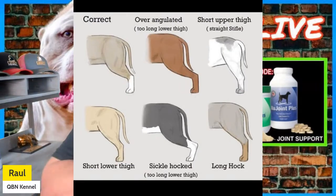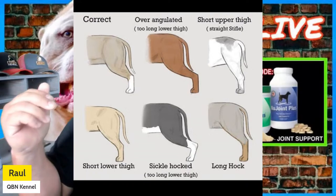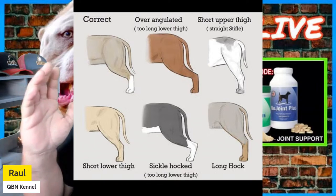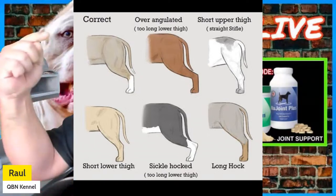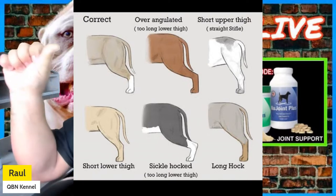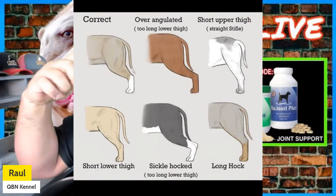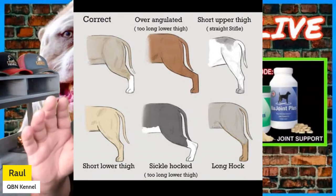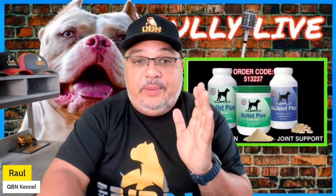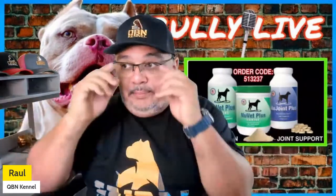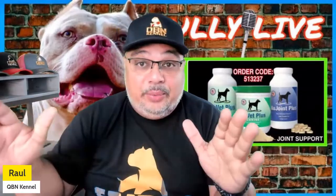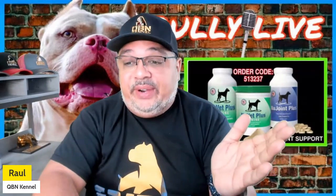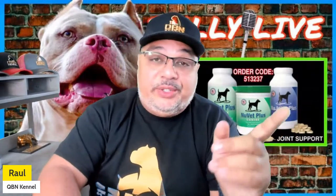Remember I said earlier that dropped pasterns — because of too much weight up front — will affect your rear. I don't care if you have correct rear angulation and a perfect topline: if that front pastern is dropped, the rear is going to seem higher than it needs to be. Whenever you're going to be looking at rears, first and foremost you need a flat surface. In my opinion the very best is a sidewalk — concrete.